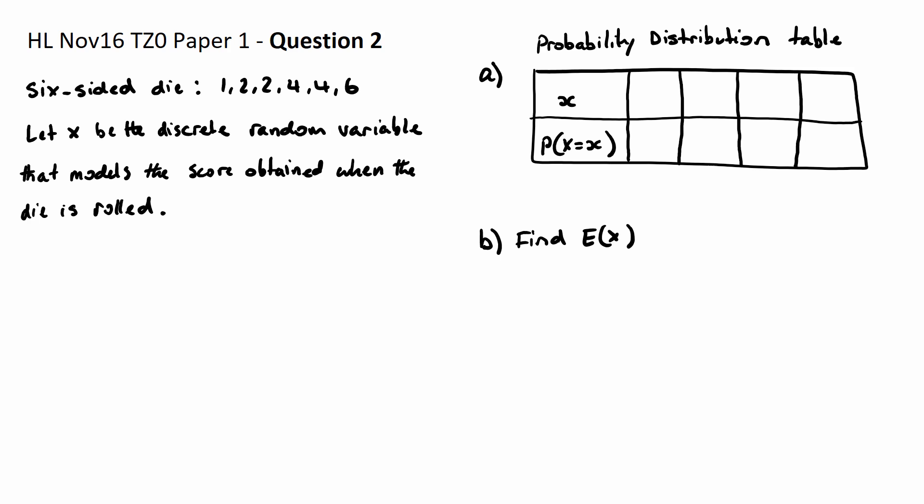Now let x be the discrete random variable that models the score obtained when this die is rolled. So we have our table here. This is a probability distribution table. And in part A, it says complete the probability distribution table.